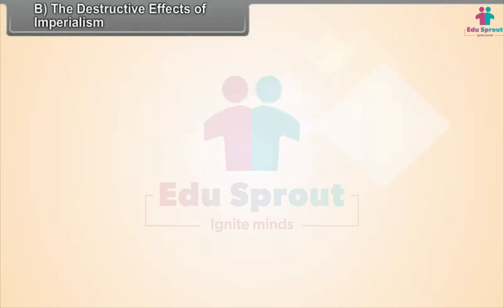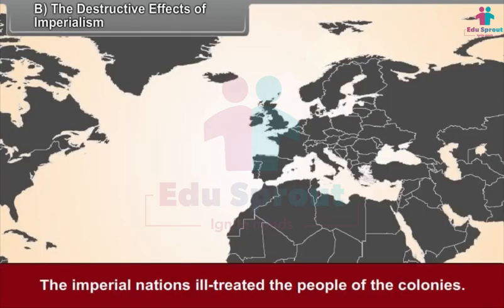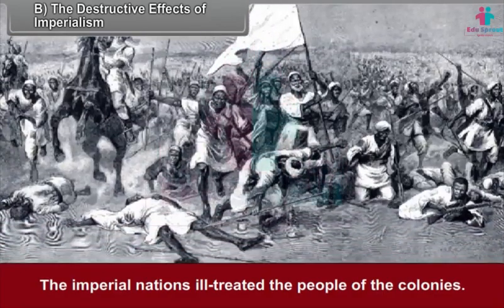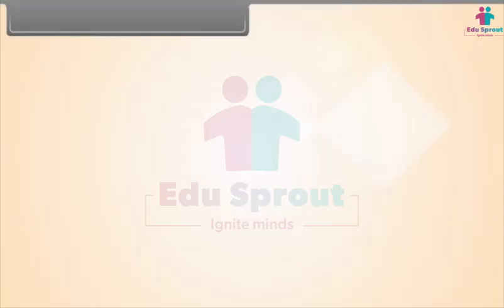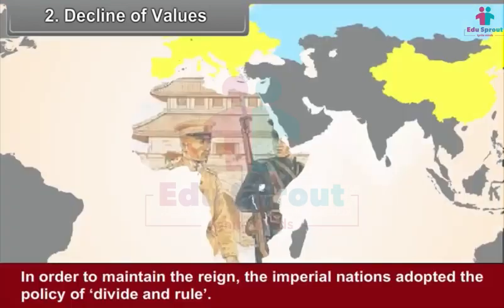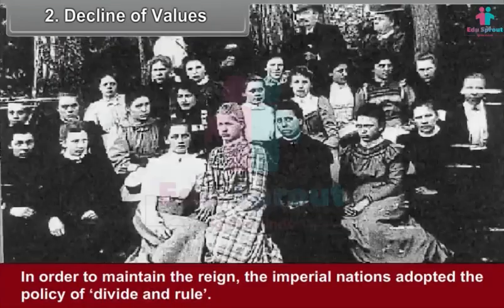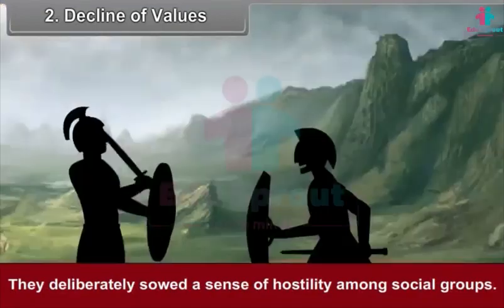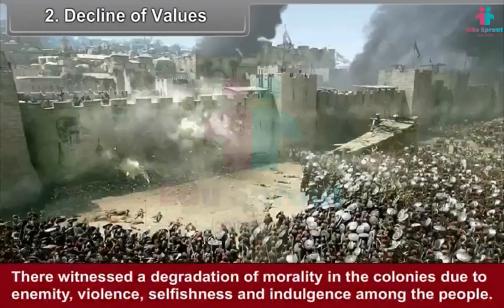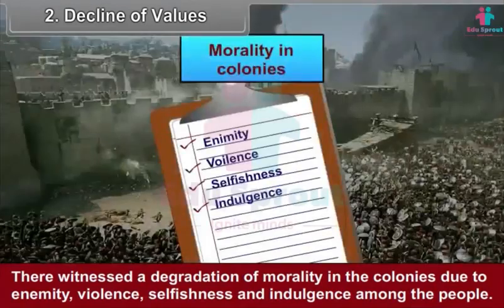The destructive effects of imperialism. First, trade of slaves. The imperial nations ill-treated the people of the colonies. They began the ghastly practice of buying and selling slaves for getting labourers at cheaper prices. Second, decline of values. In order to maintain their reign, the imperial nations adopted the policy of divide and rule. They deliberately sowed a sense of hostility among social groups. There was a degradation of morality in the colonies due to enmity, violence, selfishness and indulgence among the people.